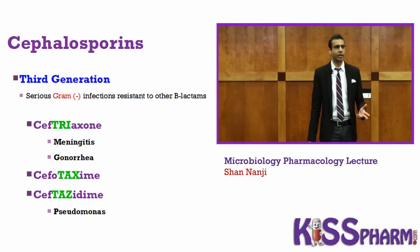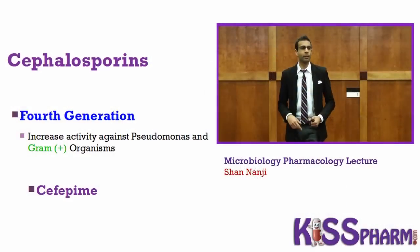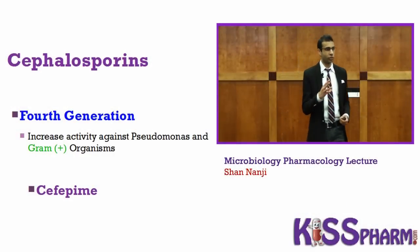Let's review the generations. Lin and Lex — first generation. Fake Fox Fur — second generation. Try, Tax, and Taz — third generation. So we've covered first, second, and third generation cephalosporins. Now we're going to do the fourth generation of cephalosporins.